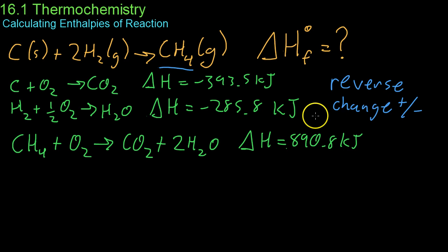The second thing is you can multiply the coefficients of known equations to fit the steps necessary to determine the enthalpy of formation. So in other words, you see this one-half here in front of the oxygen, you can multiply all the coefficients in this equation by 2 to make that a 1O2.